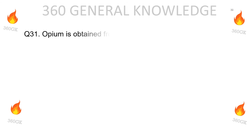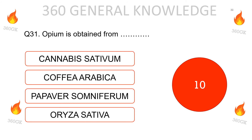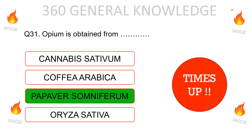Opium is obtained from: Cannabis sativum, Coffea arabica, Papaver somniferum, or Oryza sativa? The correct answer is Papaver somniferum.